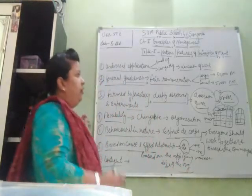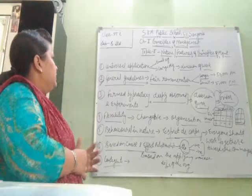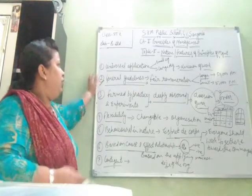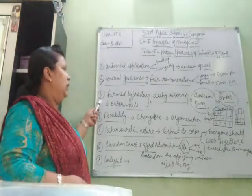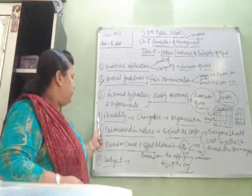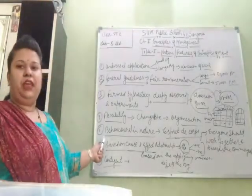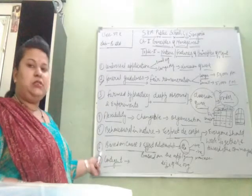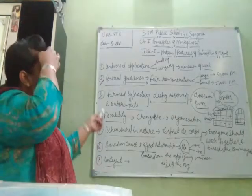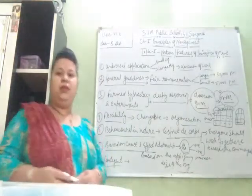We have completed the nature and features of Principles of Management. To revise: first, Universal Application; second, General Guidelines; third, Formed by Practice and Experiments; fourth, Flexibility; fifth, Behavioral in Nature; sixth, Cause and Effect Relationship; and seventh, Contingent. These are the nature or features of the Principles of Management.